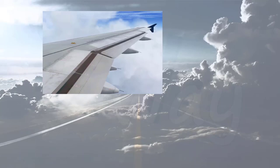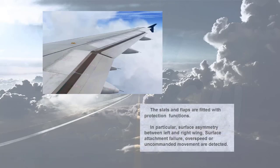The slats and flaps are fitted with protection functions. In particular, surface asymmetry between left and right wing, surface attachment failure, overspeed, or uncommanded movement are detected.